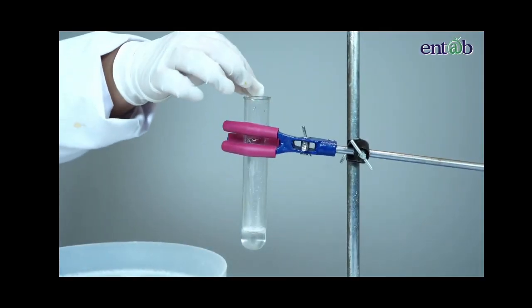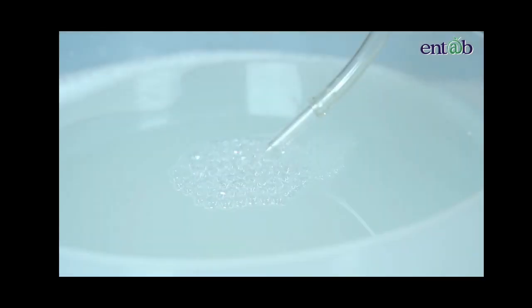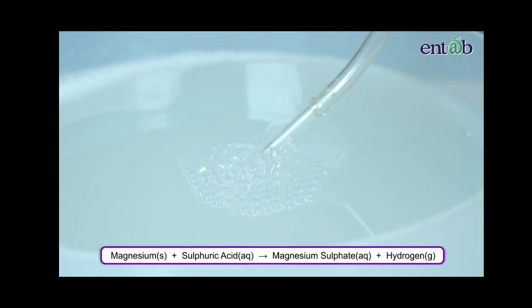Let's replace the zinc metal with magnesium ribbon. Oh wow! The reaction is taking place. The bubbles of hydrogen gas can be seen. So, we can say that sulfuric acid when it reacts with magnesium forms magnesium sulfate and hydrogen gas.